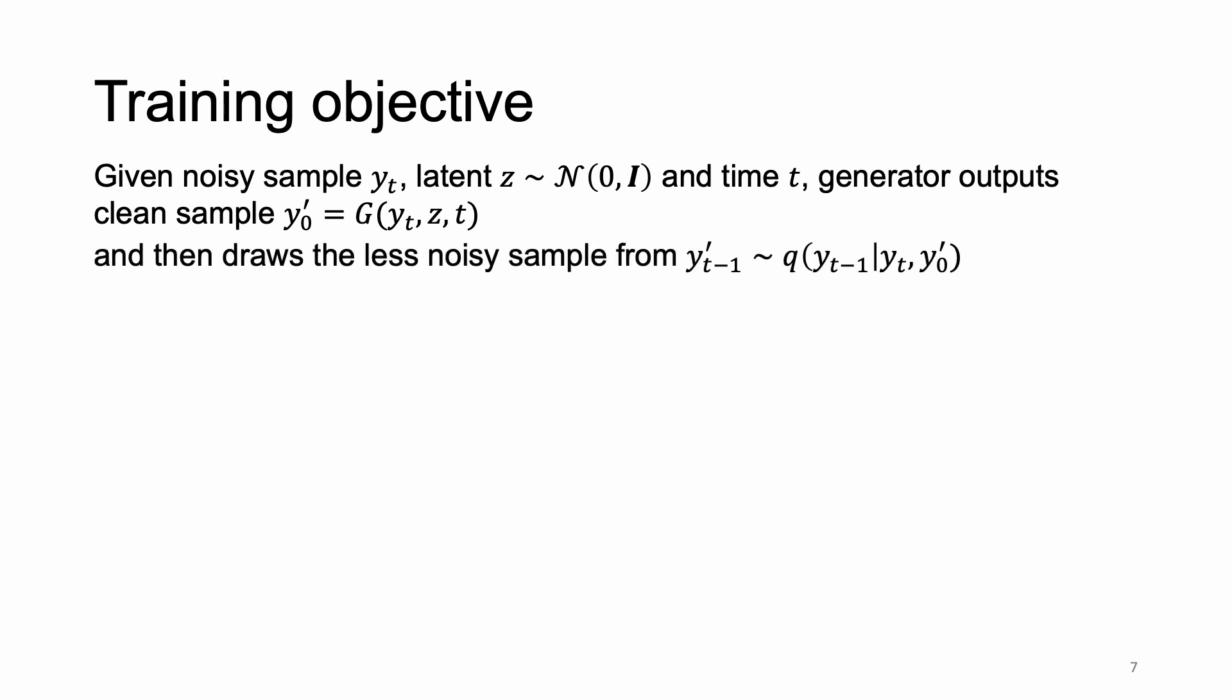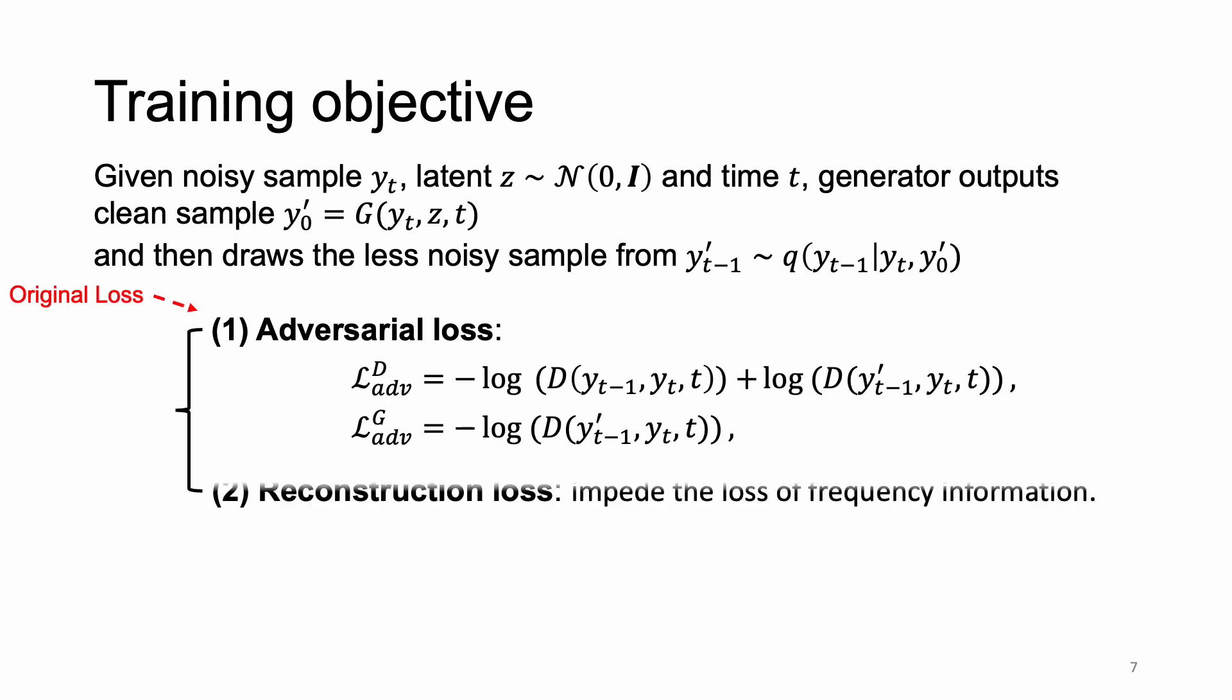Next, we describe our training objective. The model first receives input noisy sample Y_T and outputs unperturbed sample Y_0 given random sample latent Z and current step T. The less noisy sample Y_{T-1} is then drawn from posterior distribution Q, given noisy sample Y_T and the output Y_0. Apart from the original adversarial loss of DDGAN, we further introduce a reconstruction loss to alleviate the loss of frequency information. Therefore, generator loss is the combination of these terms where lambda emphasizes the penalty of reconstruction loss.